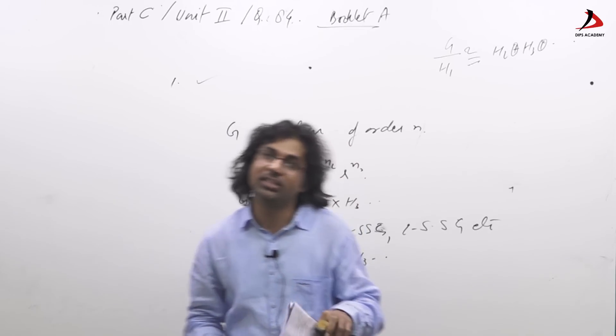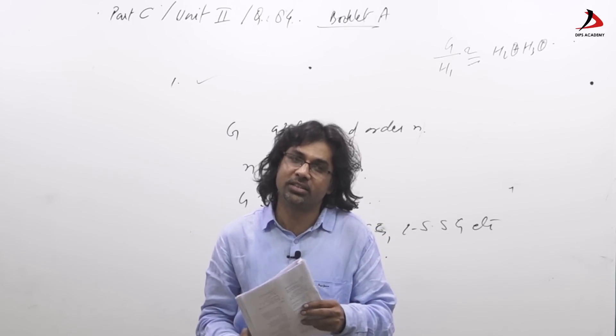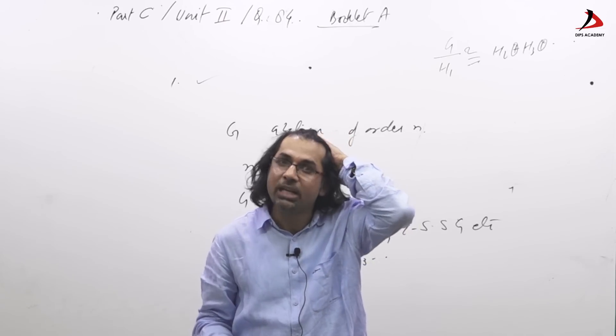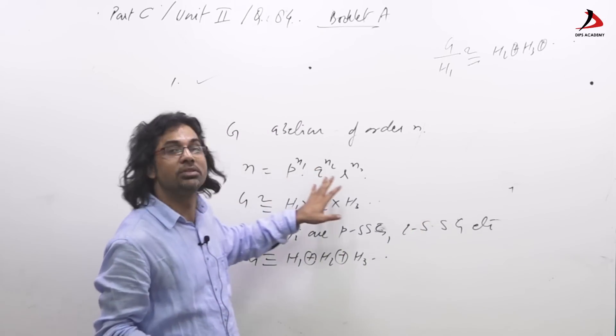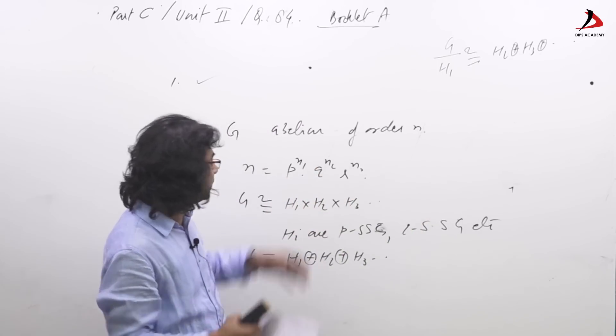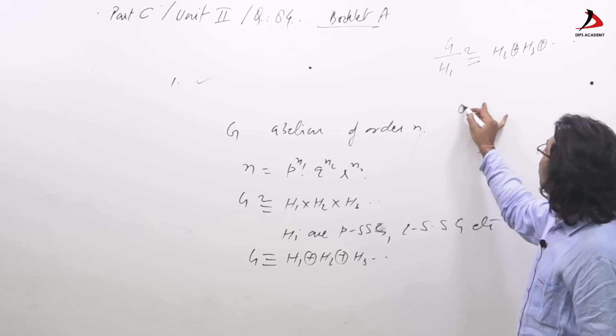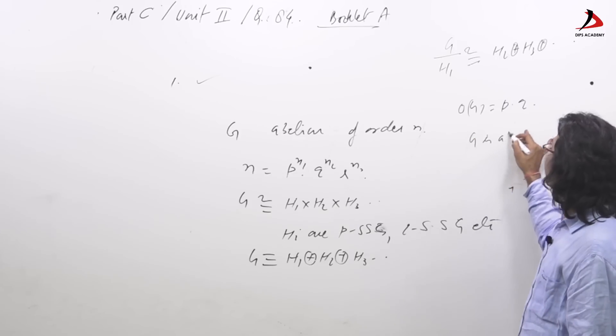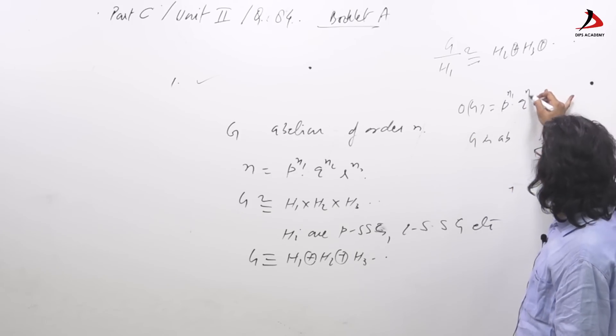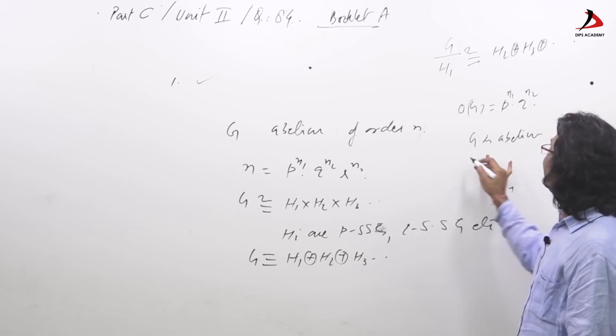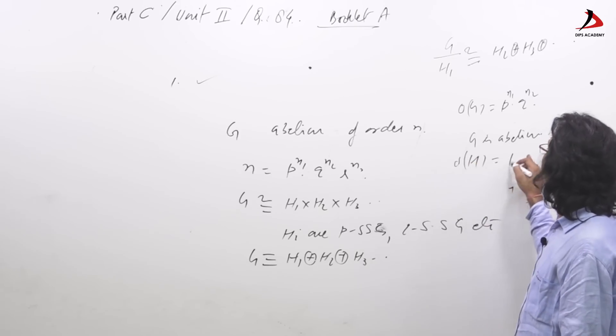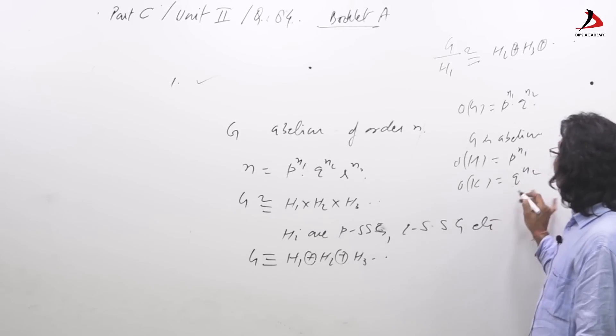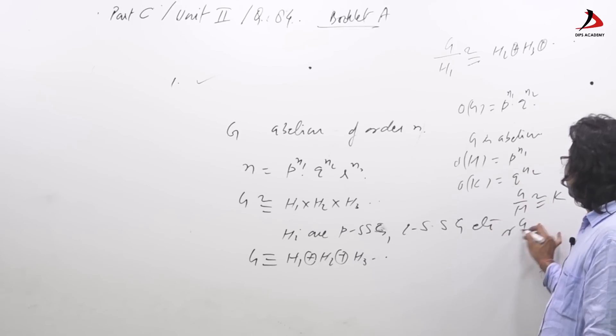Every finite abelian group is isomorphic to its, rather every finite abelian group is IDP or EDP of its p-Sylow subgroups. Here suppose for example I just take one example: order g is suppose p into q and g is abelian. Say n1, n2 being abelian, it has subgroup h of order p to power n1 and k of order q to the power n2. Then g/h is isomorphic to k or g/k is isomorphic to h.